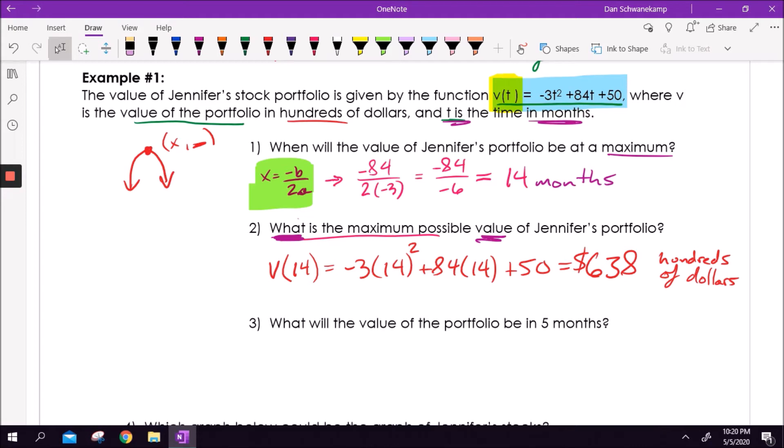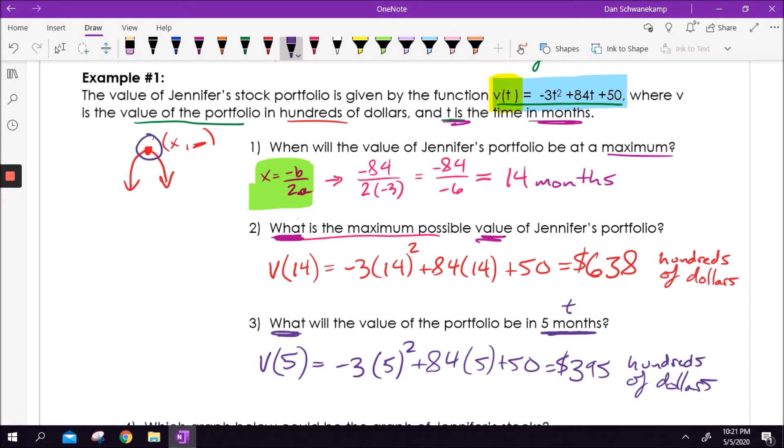What will the value of the portfolio be in 5 months? Five months is a when. What should I do with that? That's my t. So what they're asking is what is the value going to be when t equals 5. We are going to take this equation and plug 5 in for t. That's just a matter of plugging it in. Going to my calculator: negative 3 times 5² plus 84 times 5 plus 50. I get $395 hundreds of dollars. Most of that is not tough at all. It's just understanding what they're doing and that whole idea of a maximum. Understanding what this graph will look like is really beneficial.